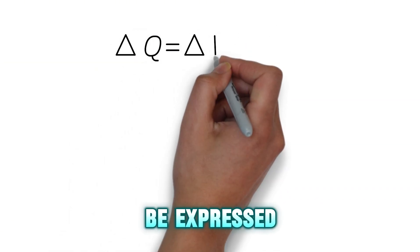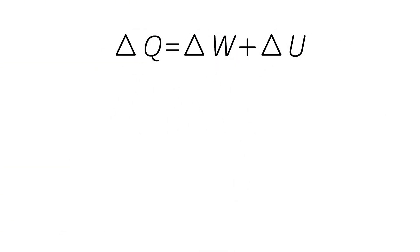Mathematically, this law can be expressed as the following equation. Here, delta Q is the heat added to the system, delta W is the work done by the system, and delta U is the change in internal energy.